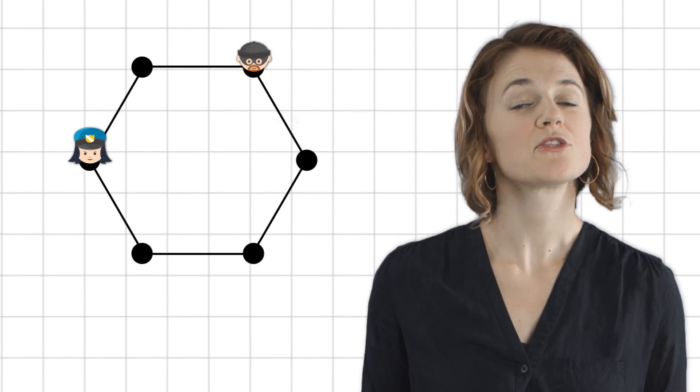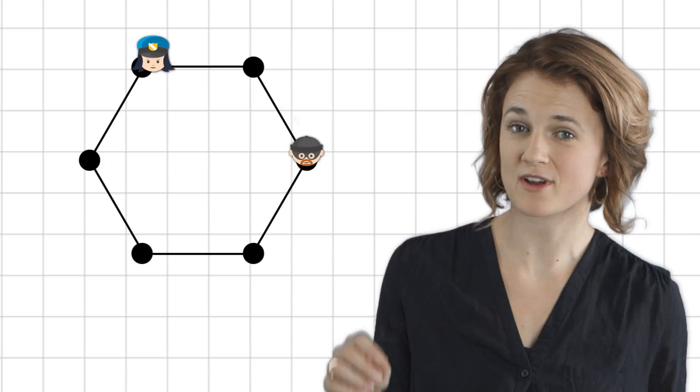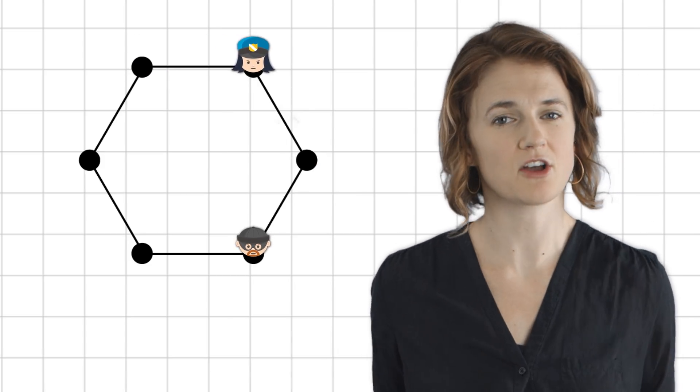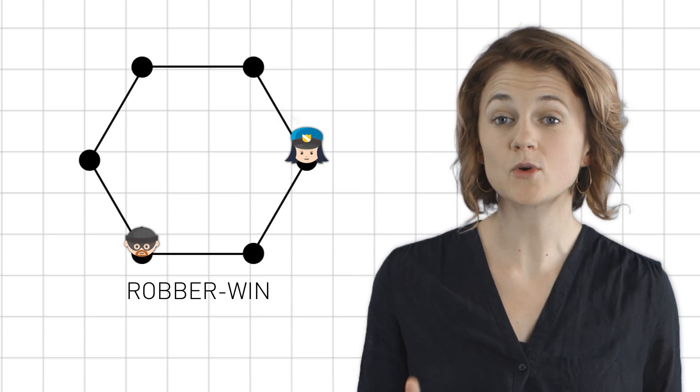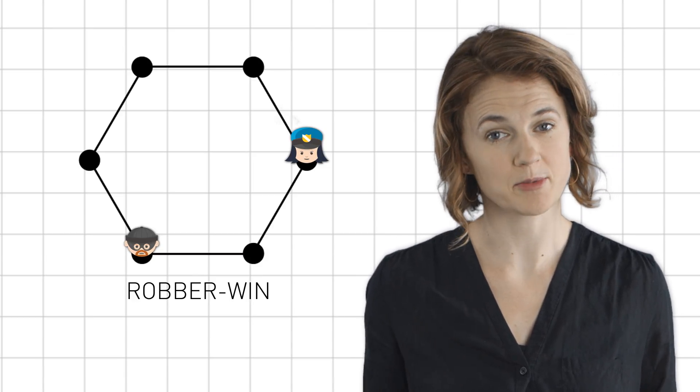On the cycle, the robber can always run in the opposite direction as the cop, and he'll never get caught. So, it's a robber-win graph. Any cycle with four or more vertices is a win for the robber.